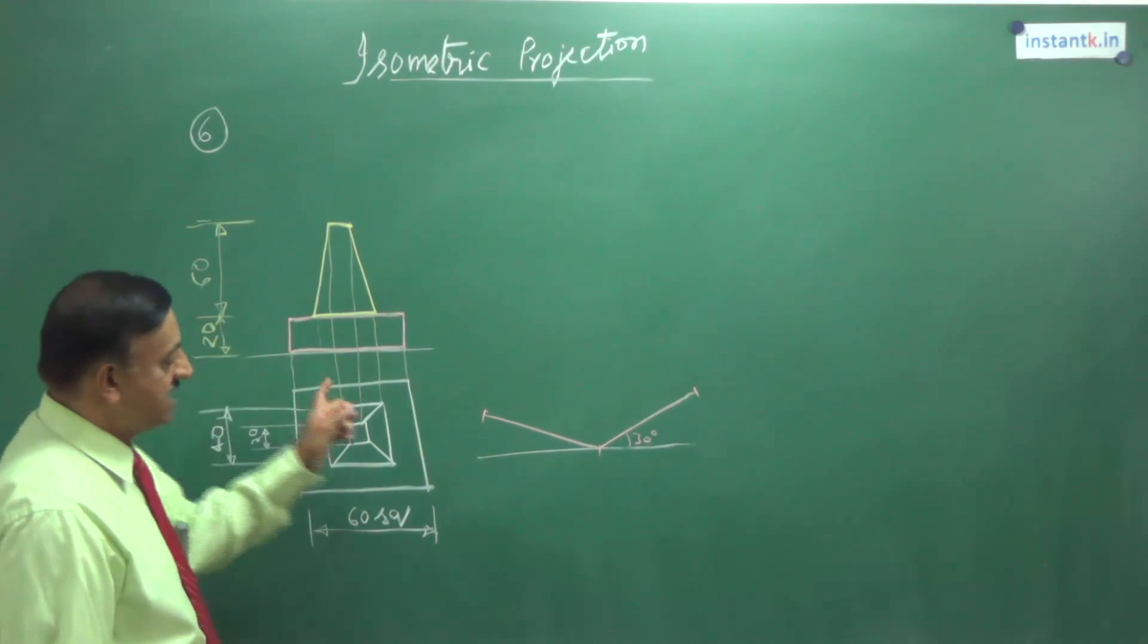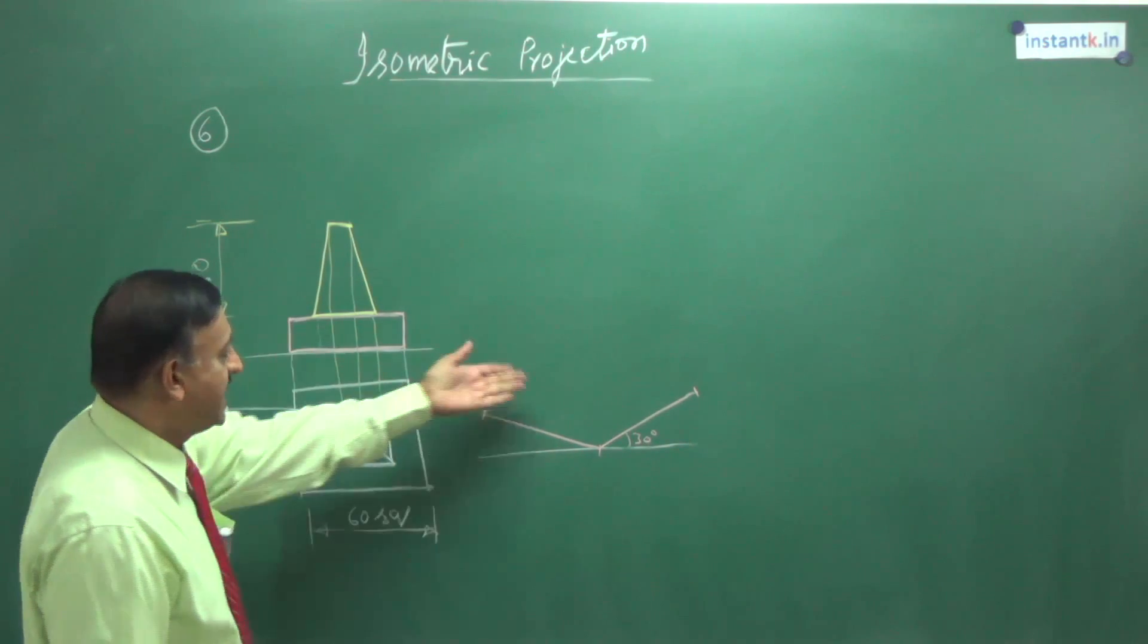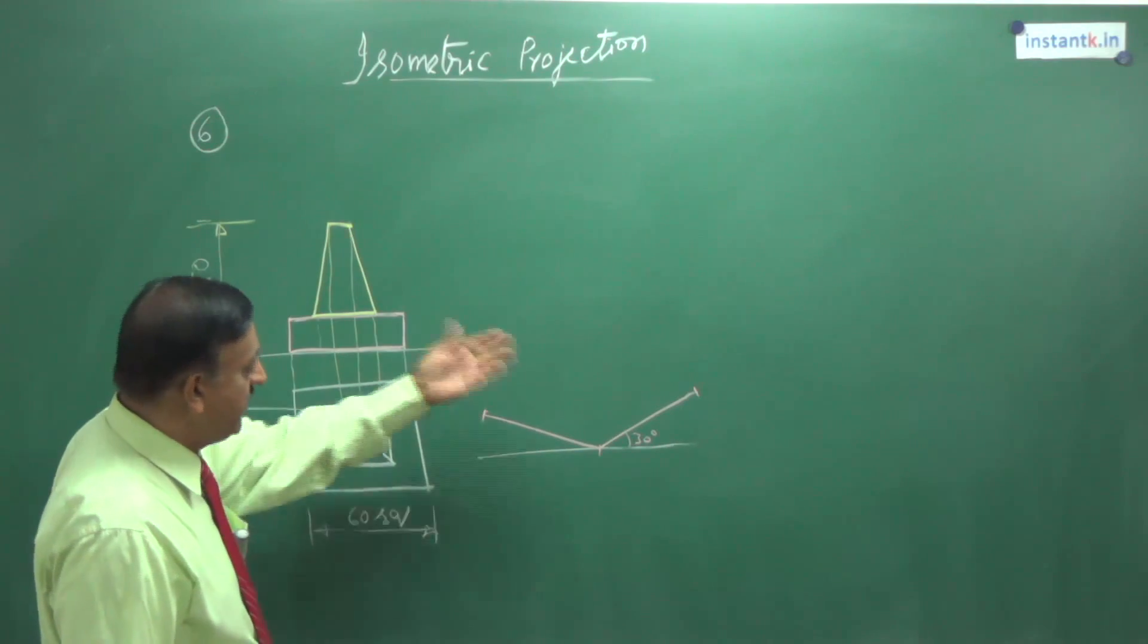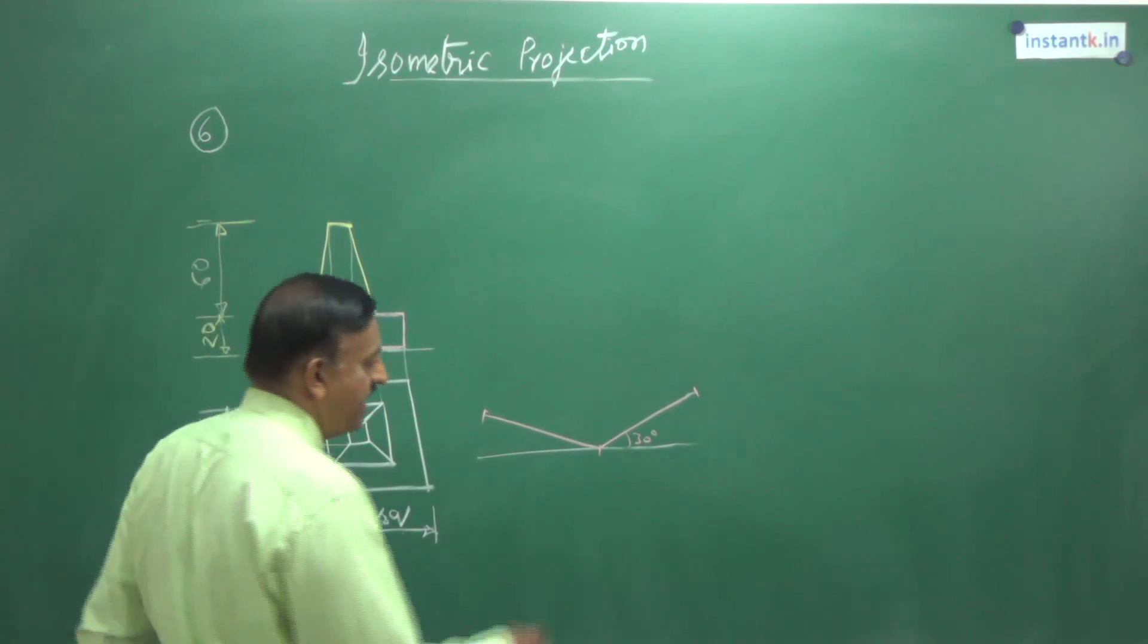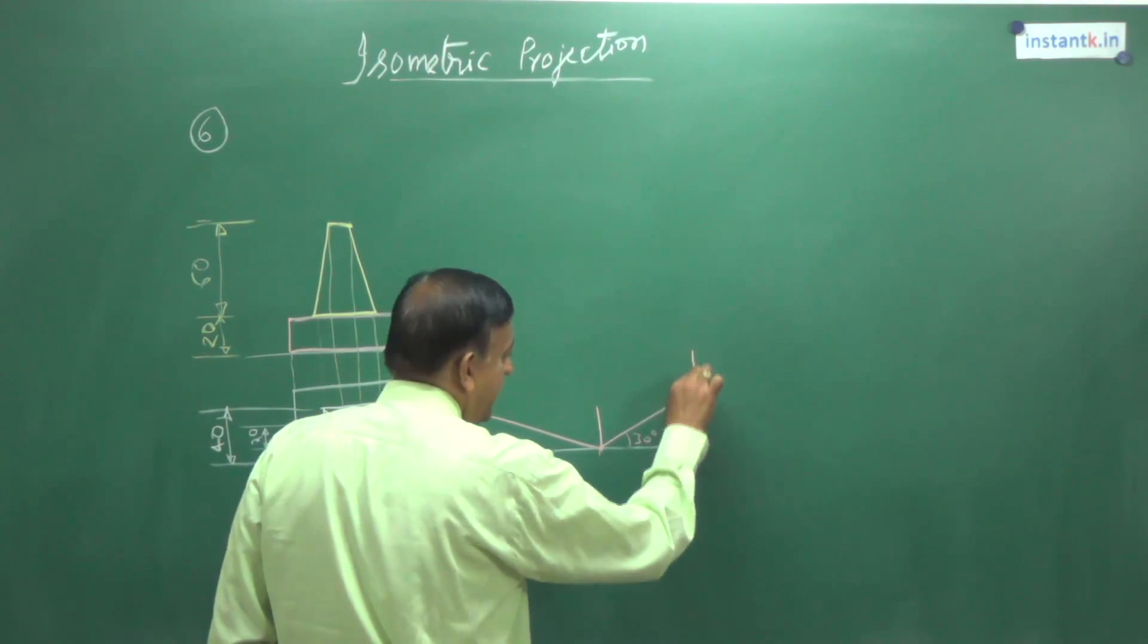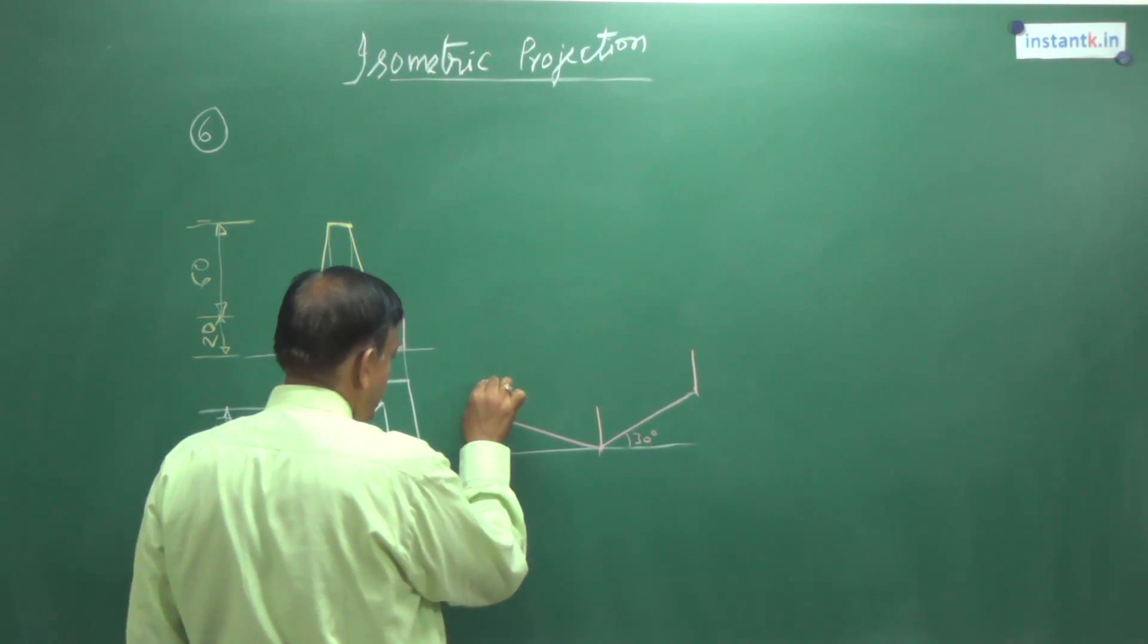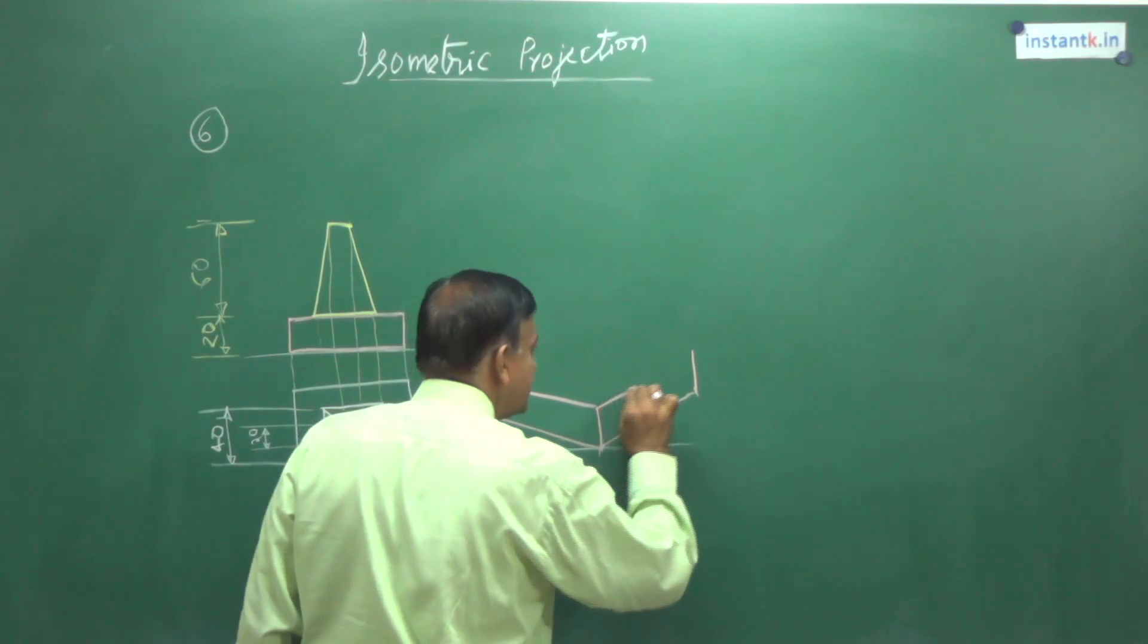Now, the height you take. That is the base two sides only we have drawn. The other two sides I am not drawing because I have to rub afterwards. So I will take the height 20 mm and draw the top two edges, just join them.